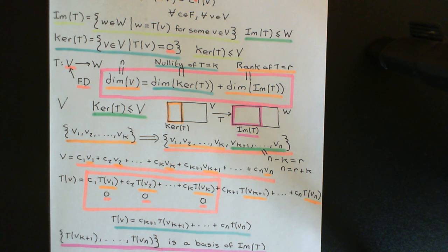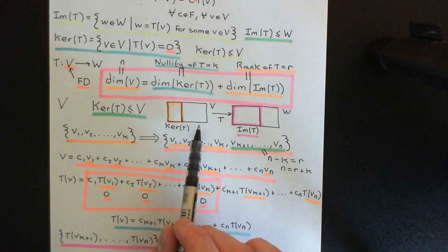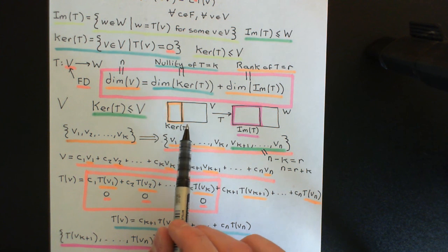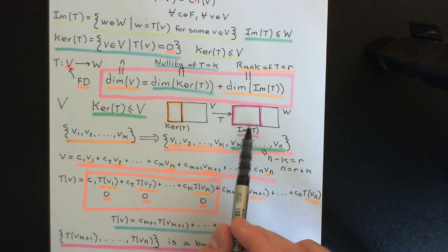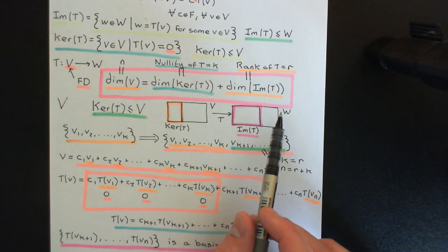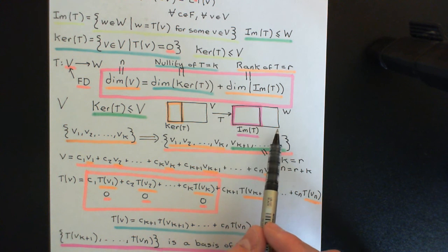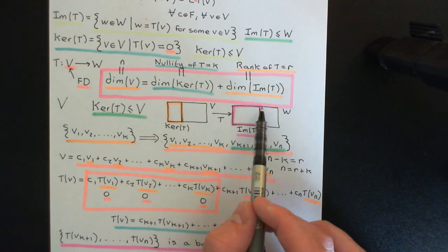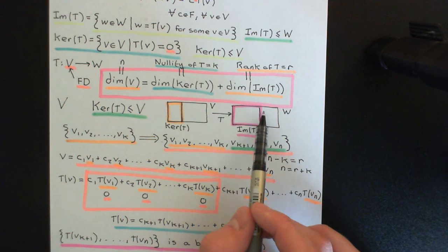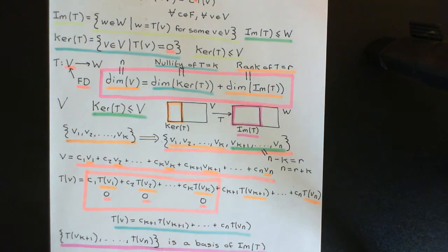As a final corollary: if the domain vector space V is finite dimensional, then the image of the linear transformation will also always be a finite dimensional vector space. We can't necessarily conclude that the entire codomain is finite dimensional, but we can conclude that the subspace we're mapping onto is. That concludes our discussion of the dimension formula.